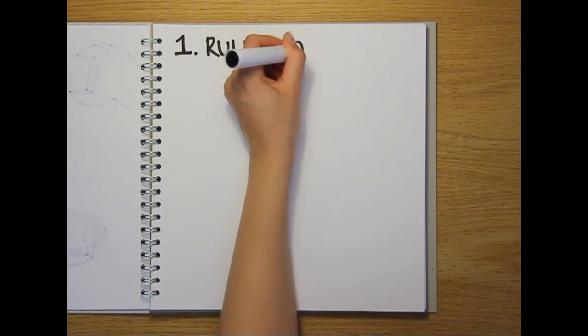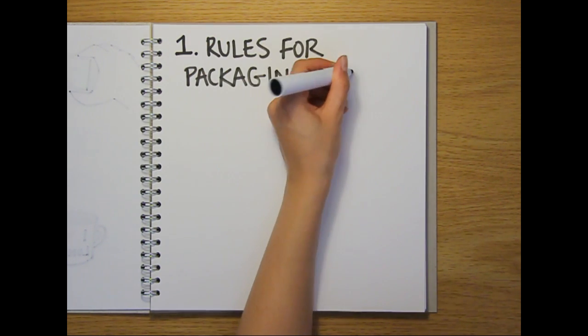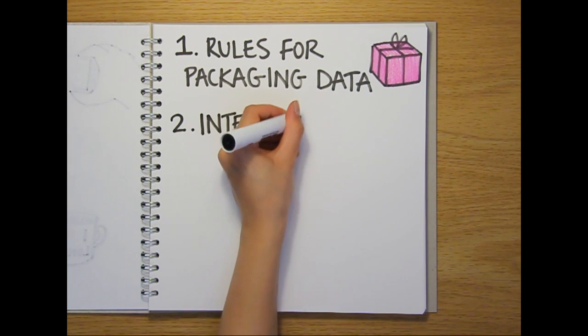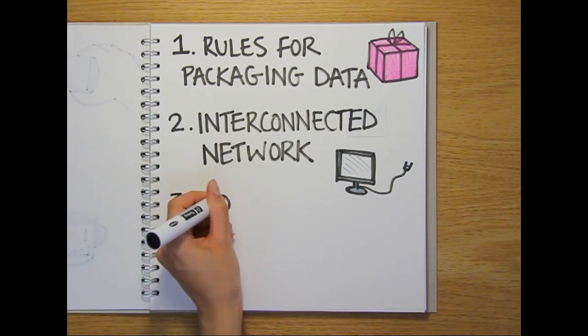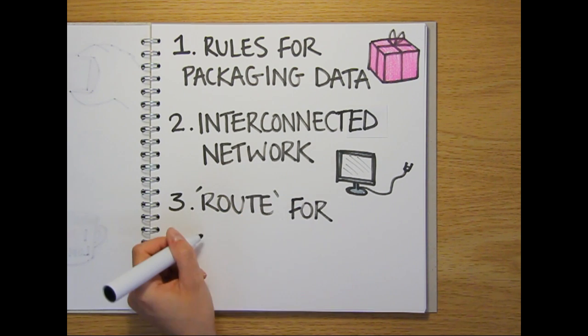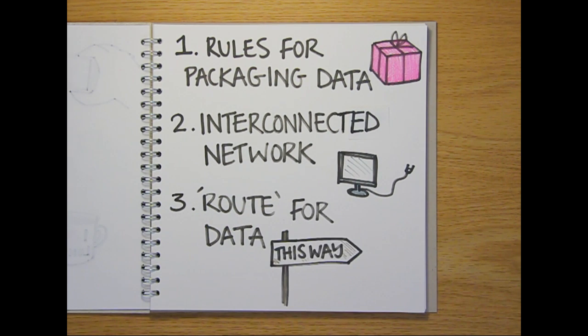One, a set of rules dictating how the data being sent and received is packaged. Two, an interconnected network over which the data will be sent. And three, a way to route the packaged data across the internet from the computer that's sending it to the machine that needs to receive it.